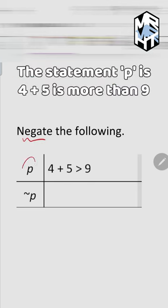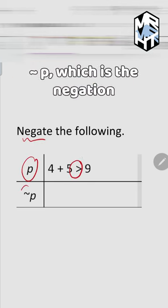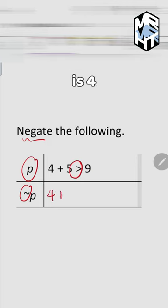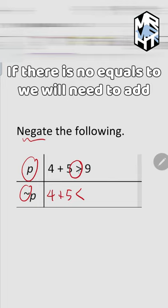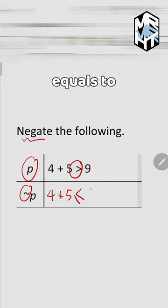Negate the following statement: p is '4 plus 5 is more than 9.' Tilde p, which is the negation, is '4 plus 5' — change the sign. If there is no equals to, we need to add equals to, giving us 4 plus 5 is less than or equal to 9.